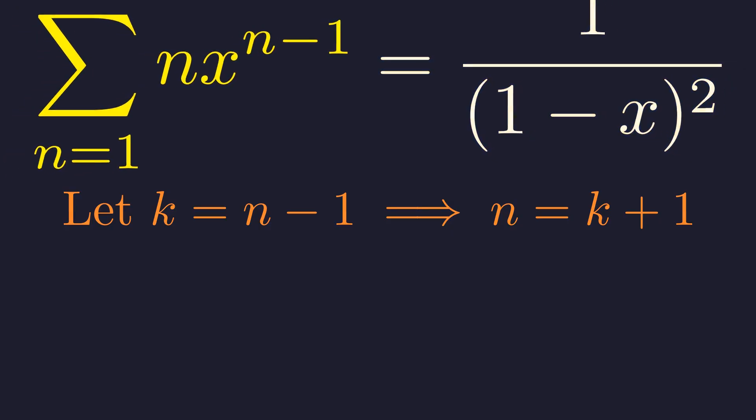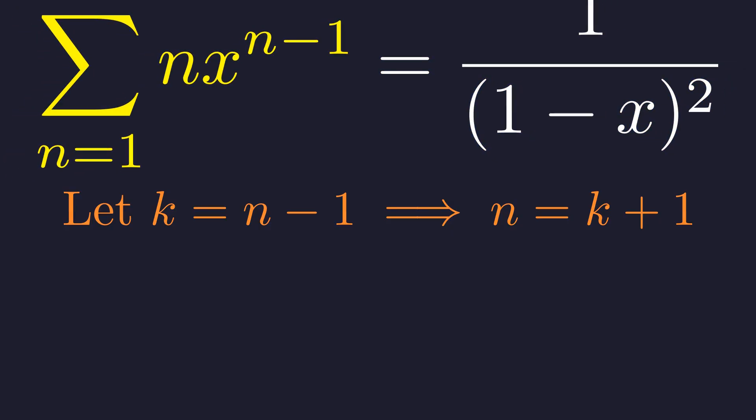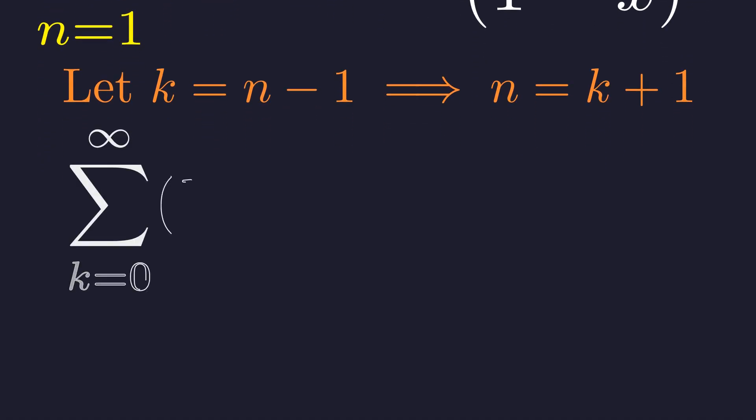Let's substitute each part. n will become k plus 1, n minus 1 will become k, and the starting index, n equals 1, becomes k equals 0. After substituting, we get the sum from k equals 0 to infinity of the quantity k plus 1 times x to the power k. The structure is now identical to our original problem.